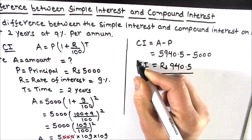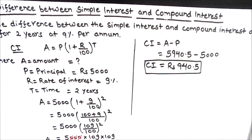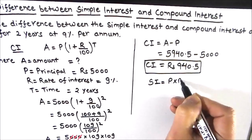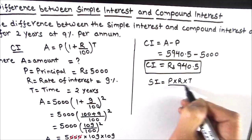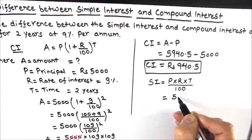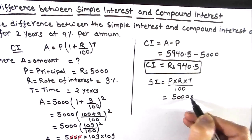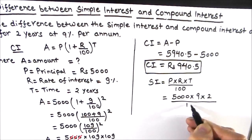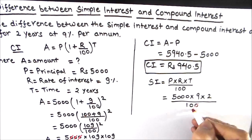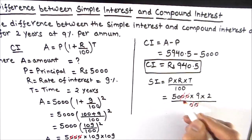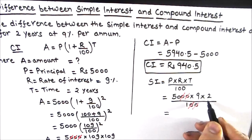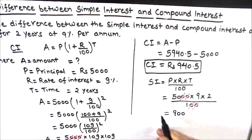Now we will find the simple interest using the formula: Simple Interest = (P × R × T) / 100. Principal is 5000, R is 9%, and T is 2. So that is 5000 × 9 × 2 divided by 100. The zeros cancel, giving 50 × 9 × 2 = 900. So our simple interest is rupees 900.